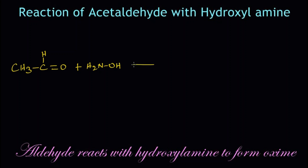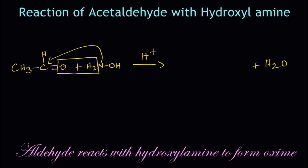H2NOH, in the presence of an acid catalyst. What happens? This oxygen and this hydrogen will get eliminated as a water molecule, H2O. The remaining NOH group will get attached to this carbon atom, so we get CH3CH double bond N single bond OH.